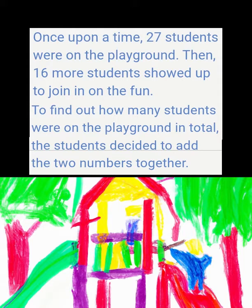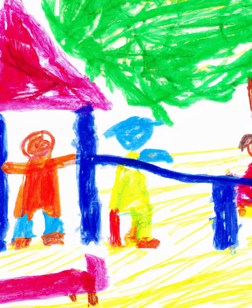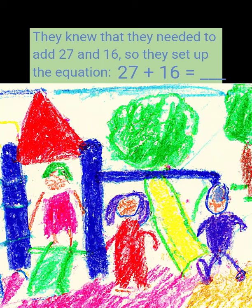16 more students showed up to join in on the fun. To find out how many students were on the playground in total, the students decided to add the two numbers together. They knew that they needed to add 27 and 16, so they set up the equation: 27 plus 16 equals.